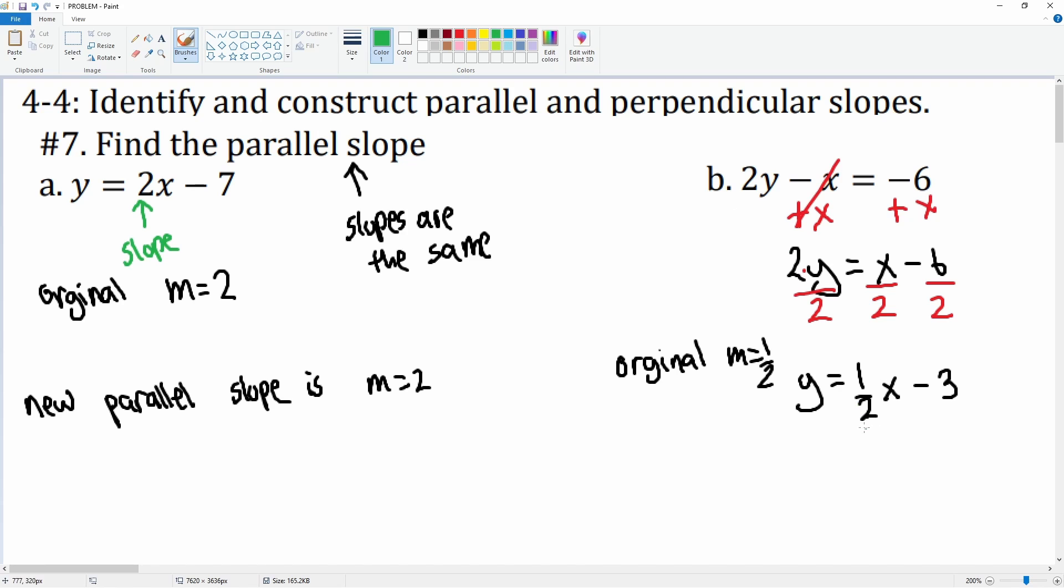We can say that the original slope is m equals 1/2 because it's right here. And then we can say the new parallel slope is also going to be m equals 1/2, because for it to be parallel, the slopes have to be the same.